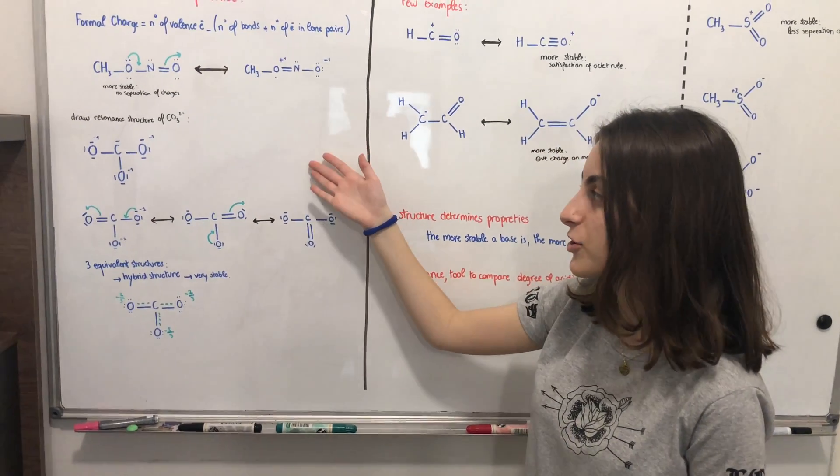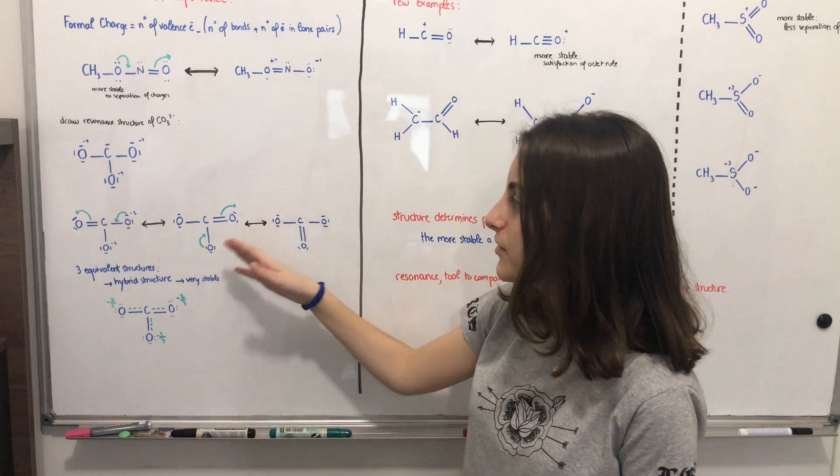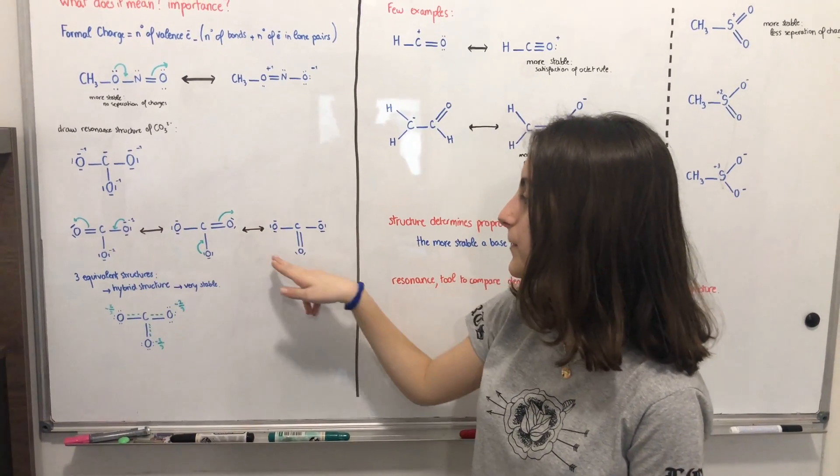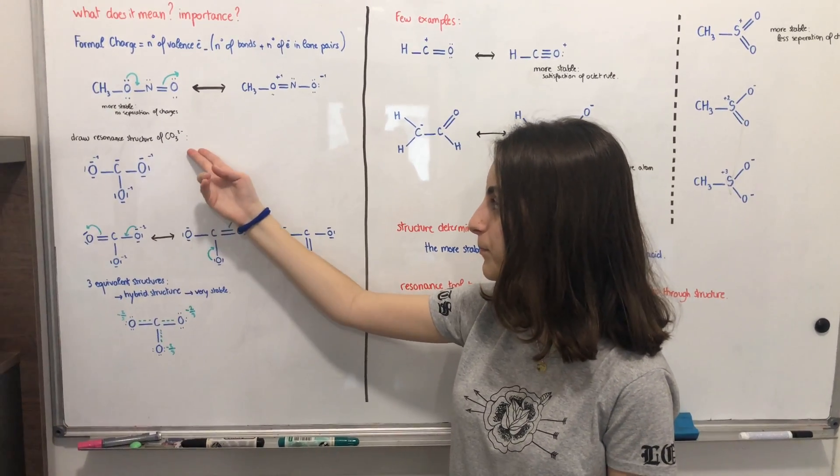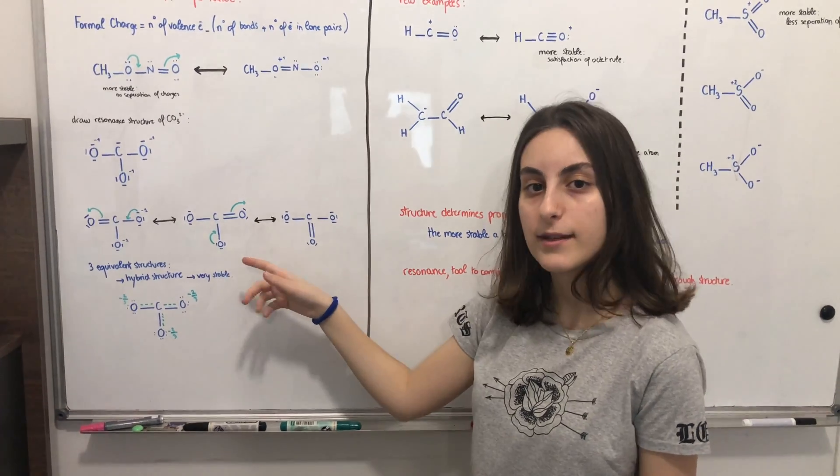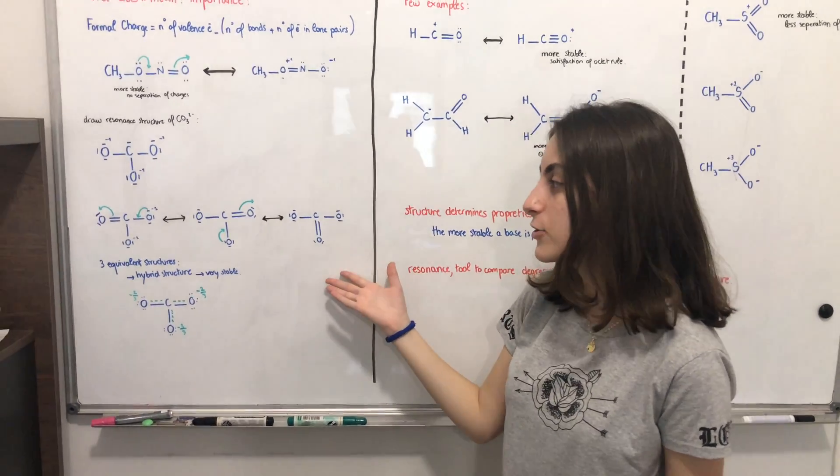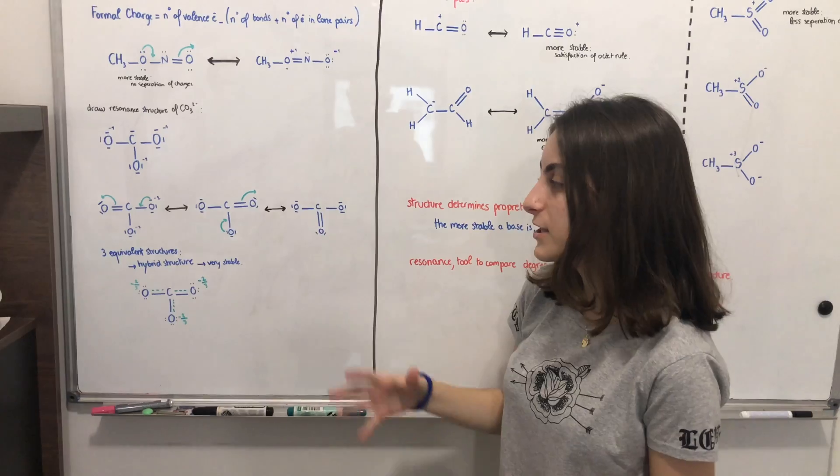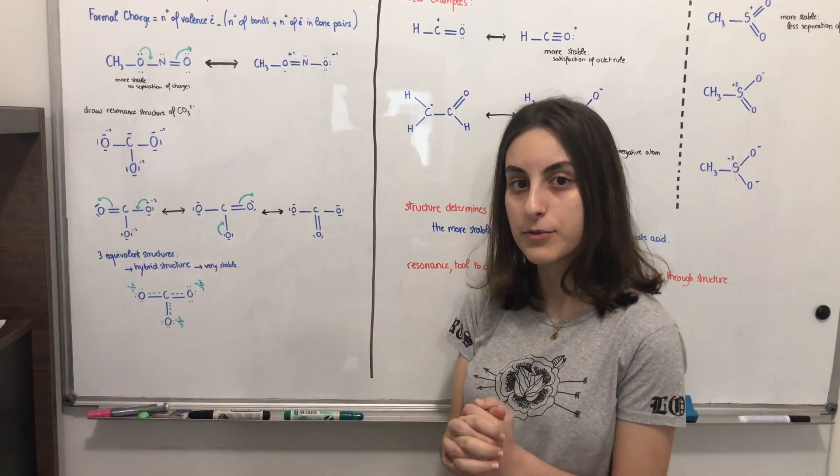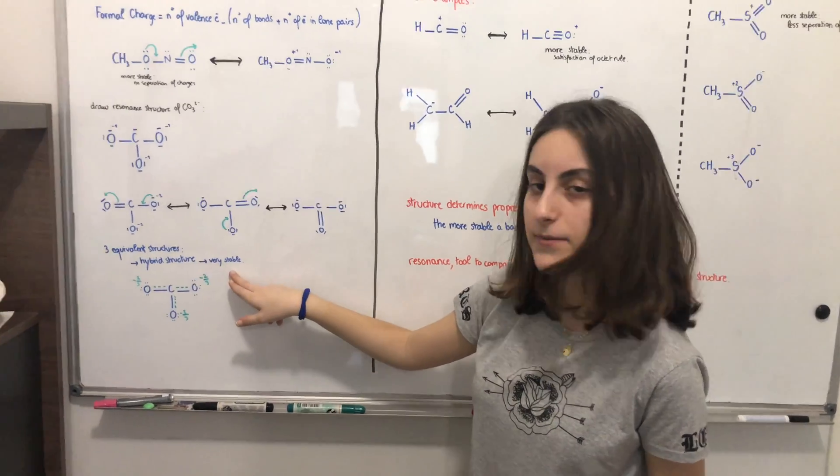So here I drew a resonance structure of carbonate. As you can see here, there are three resonance structures for this molecule. And they are equivalent. And because they are equivalent, we can draw a hybrid structure, which is kind of the combination of the three. And it is very stable.